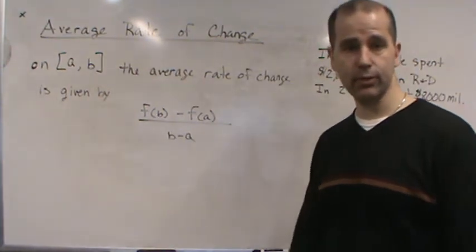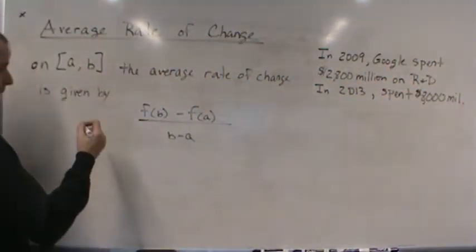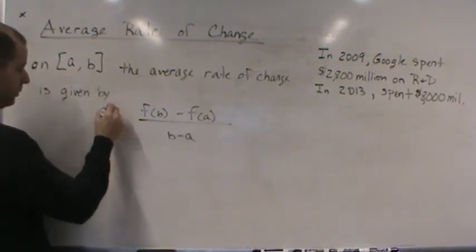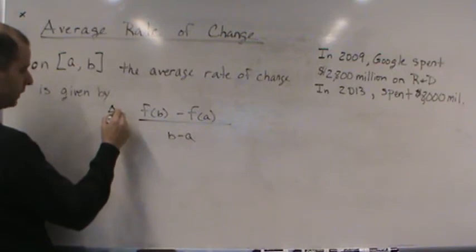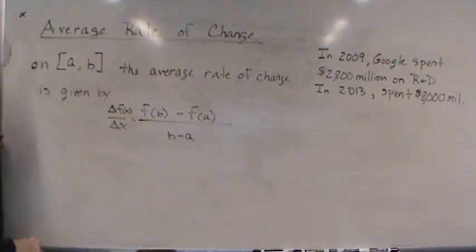This is nothing more than the slope formula. The average rate of change is just change in Y over change in X - the change in f(x) over the change in x. It's just the slope formula, but we call it average rate of change.